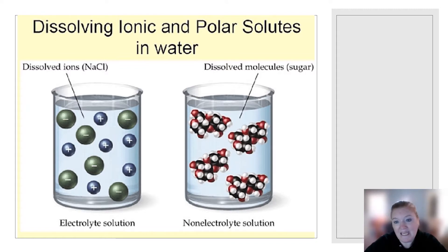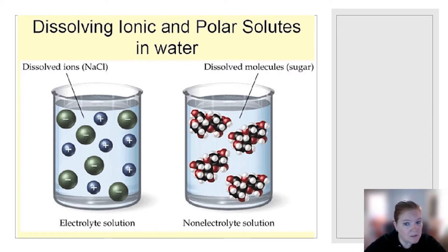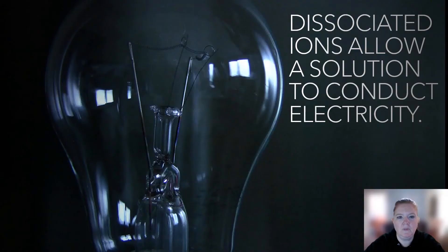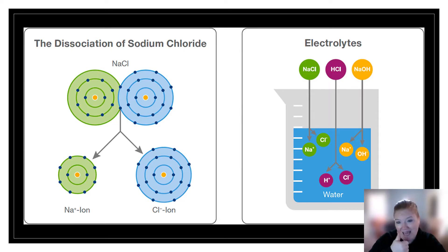If something is polar it will dissolve in water; if something is ionic it will also dissolve in water. Non-polar things will not dissolve in water. Since salt is an ionic compound, it is an electrolyte. Sugar is covalent or molecular, so it is a non-electrolyte. Those dissociated ions allow the solution to conduct electricity — electrolytes: acids, bases, and salts allow it to conduct electricity.